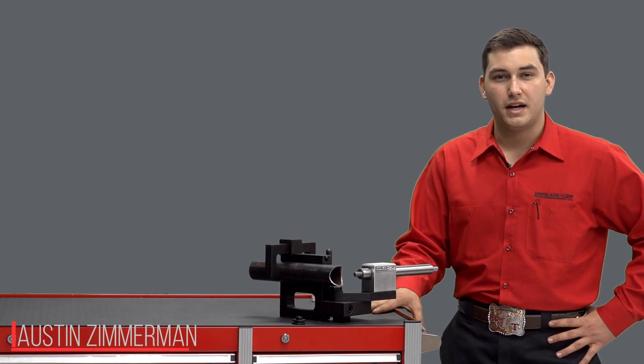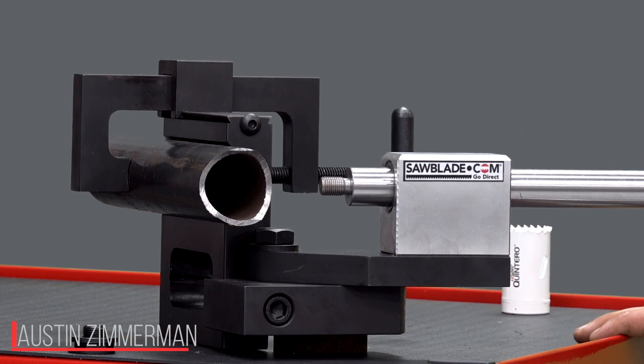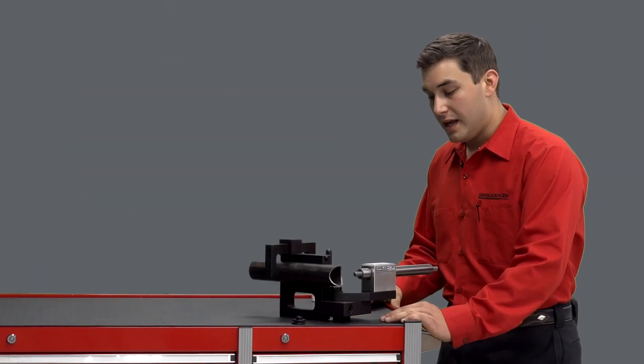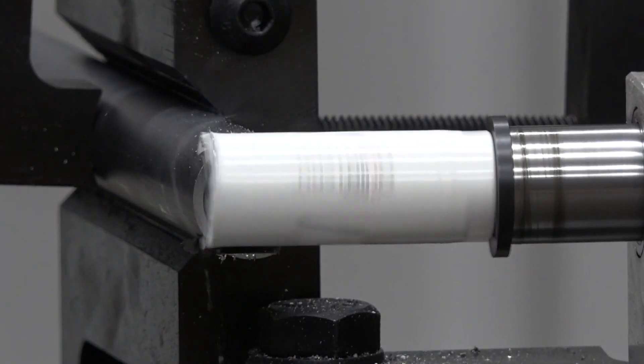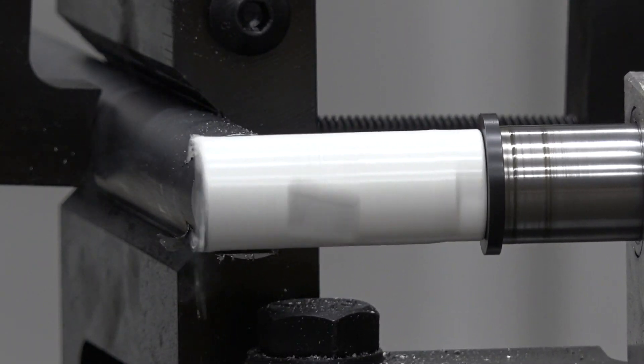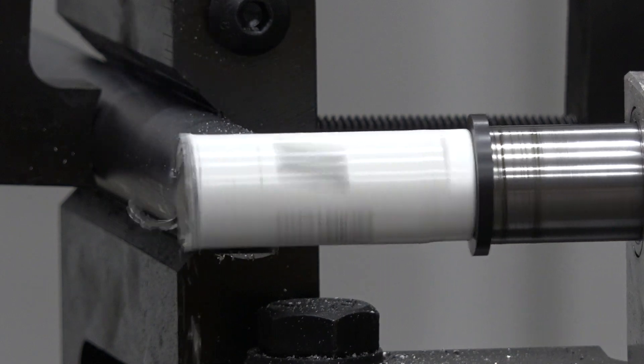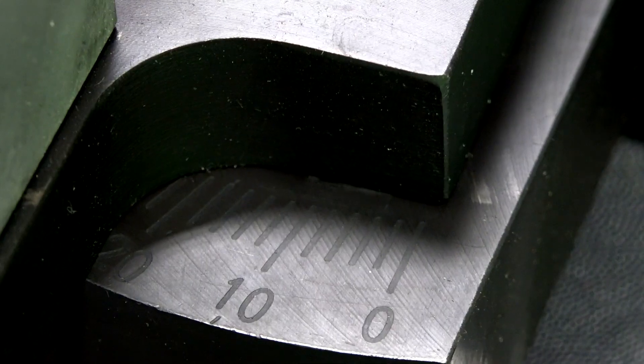Hi, I'm Austin Zimmerman from sawblade.com and today I want to talk to you about the TN750 tubing notcher. This is an industrial quality tubing notcher that covers a wide variety of applications from fish mouthing tubing in a race car to building a swing set in your own backyard.